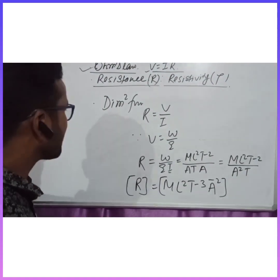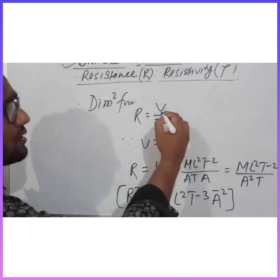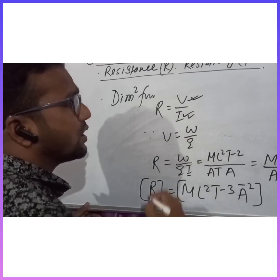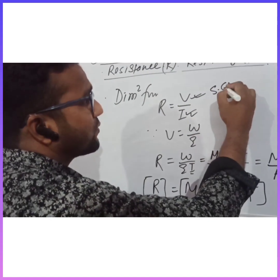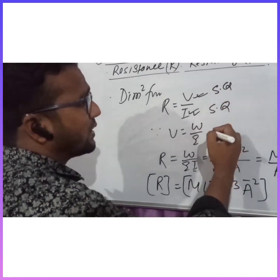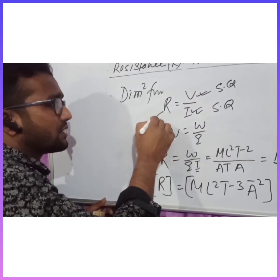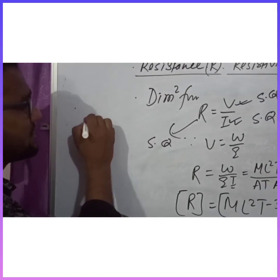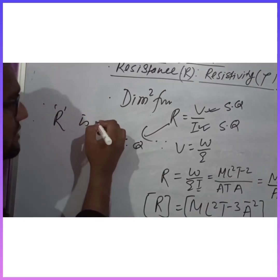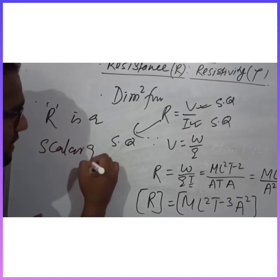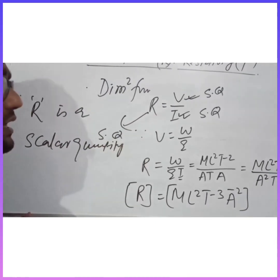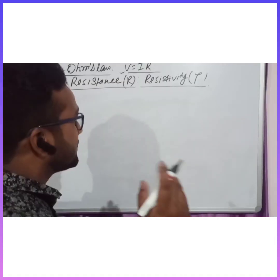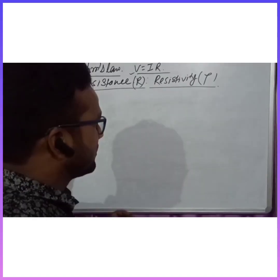Also we know that potential V is a scalar quantity and current is also a scalar quantity. The ratio of scalar to scalar means R is also a scalar quantity. So we can write here: resistance is a scalar quantity.